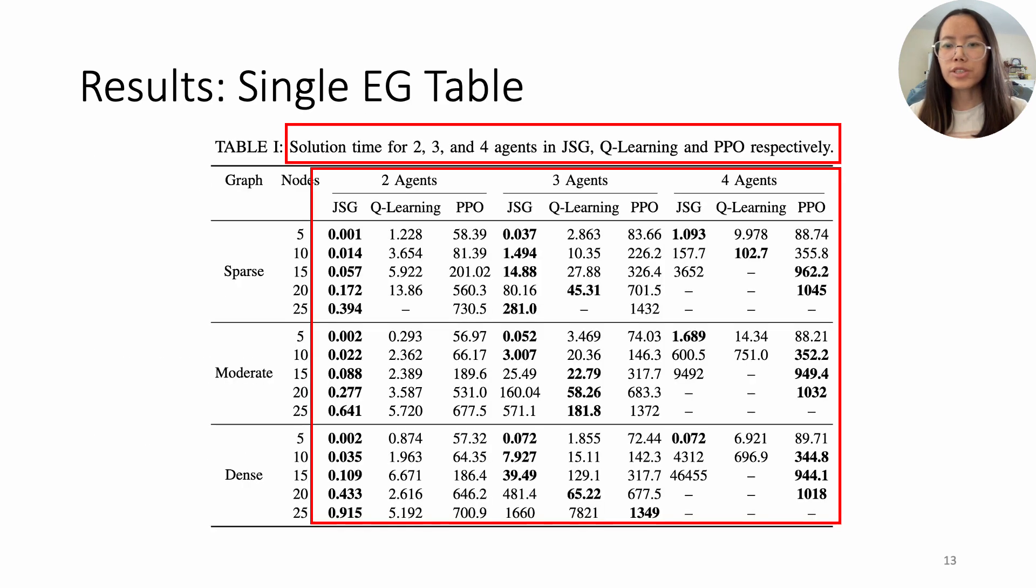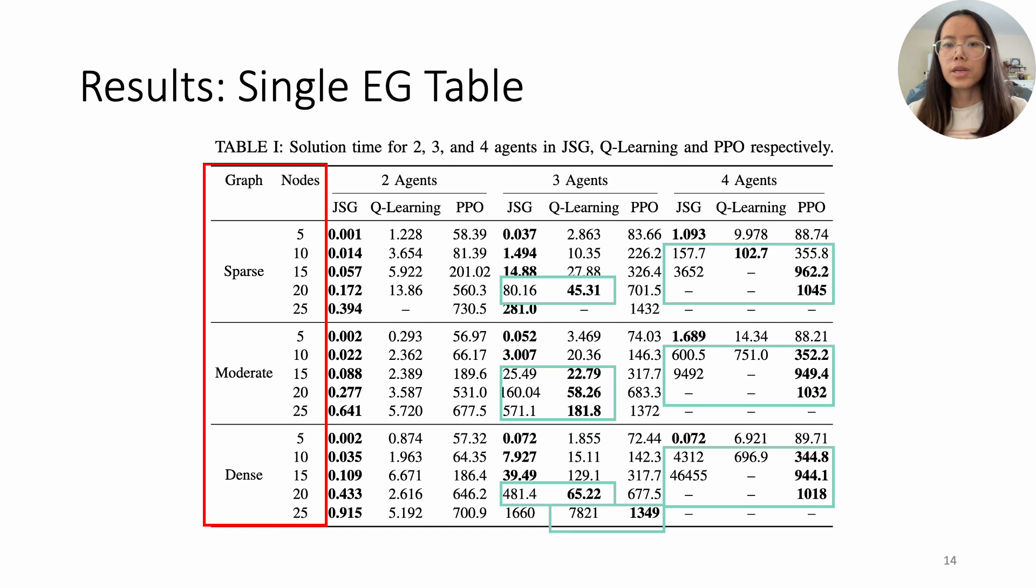For single EG experiment, we generate solution times for two to four agents using GSG, Q-Learning, and PPO. In experiments with 5 to 25-node graphs of different densities, RL efficiency drops for larger problems, yet its advantage over GSG starts to emerge with complex graphs and more agents.